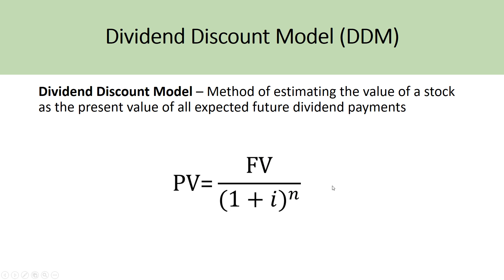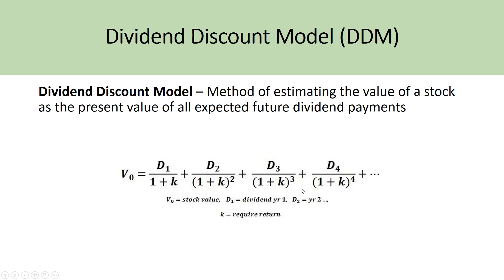Just a quick overview: the present value formula is a future value divided by one plus i, the interest rate, raised to the power of that period. For the dividend in the first year, it's one plus K to the power of one; for the second year dividend, it's one plus K to the power of two, and so on. It is a tedious process and not really realistic, but for financial courses that provide this information in the question, you simply discount all of the dividends to get the value of the stock.